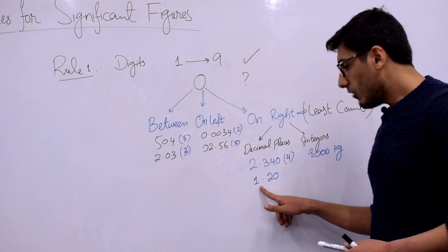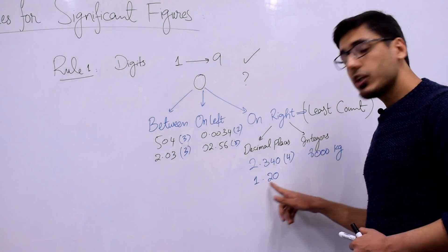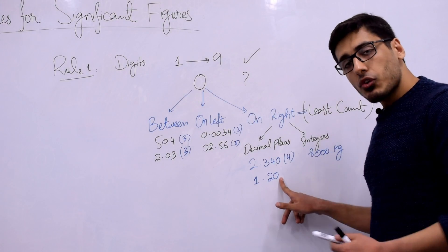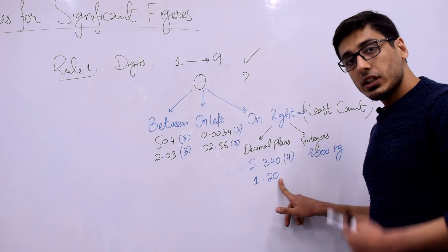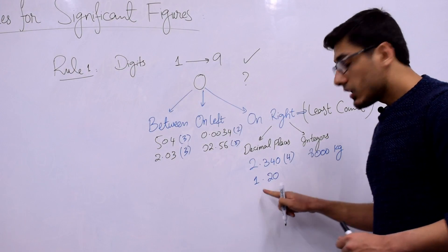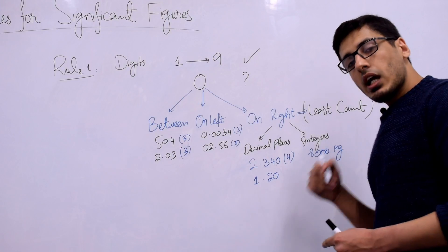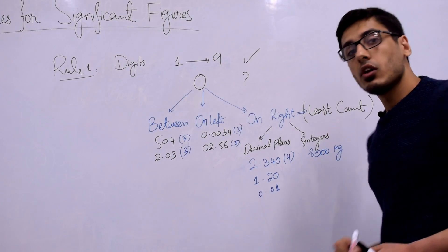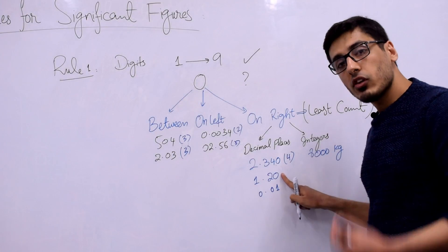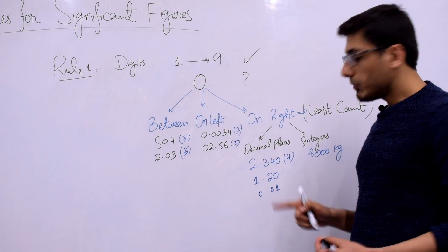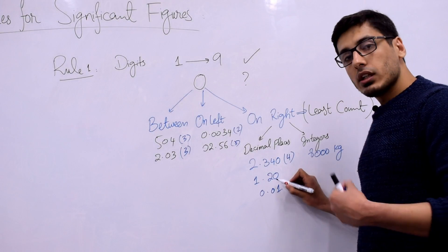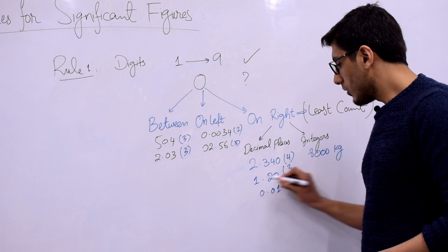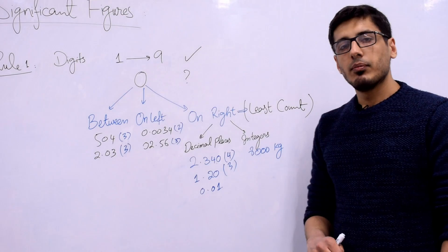Similarly, if I write a measurement as 1.20, it means the zero counts toward the reading and is part of the least count — the device had a least count of 0.01. That is why the zero is placed there even if your measurement was only 1.2. The final number of significant figures in this reading is 3: 1, 2, and 0.